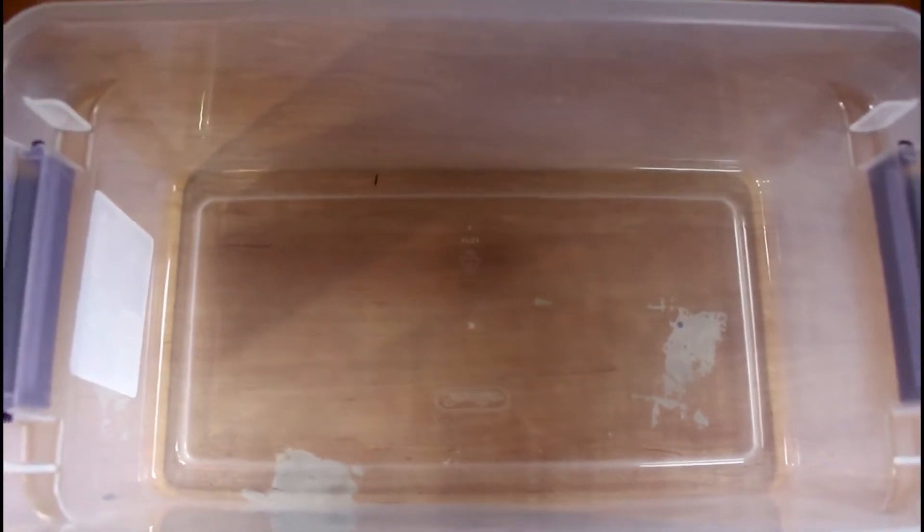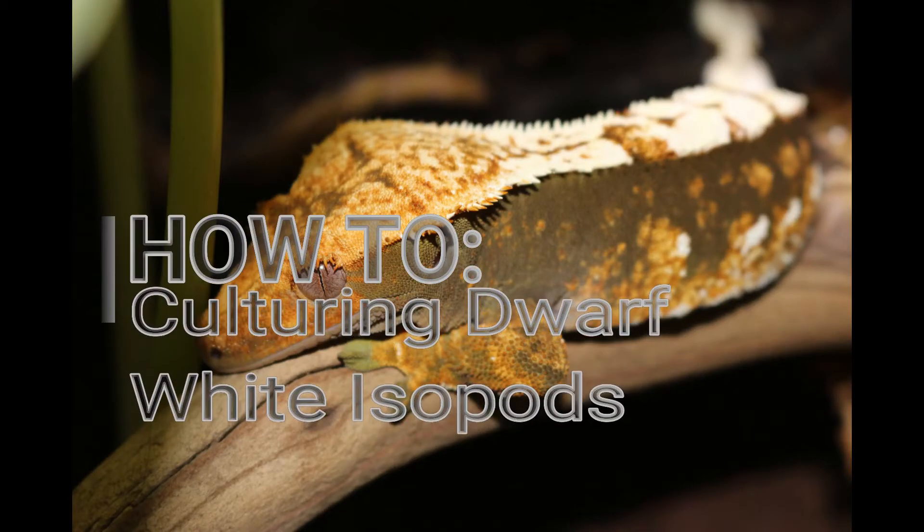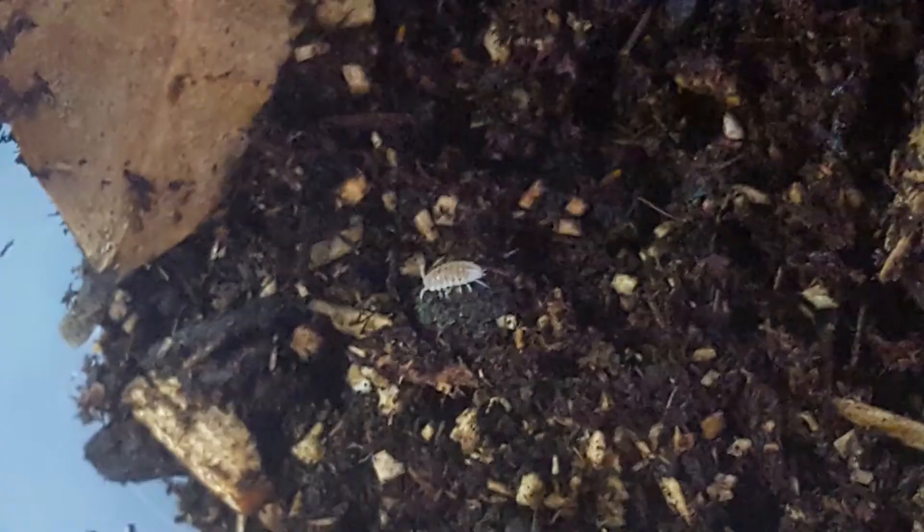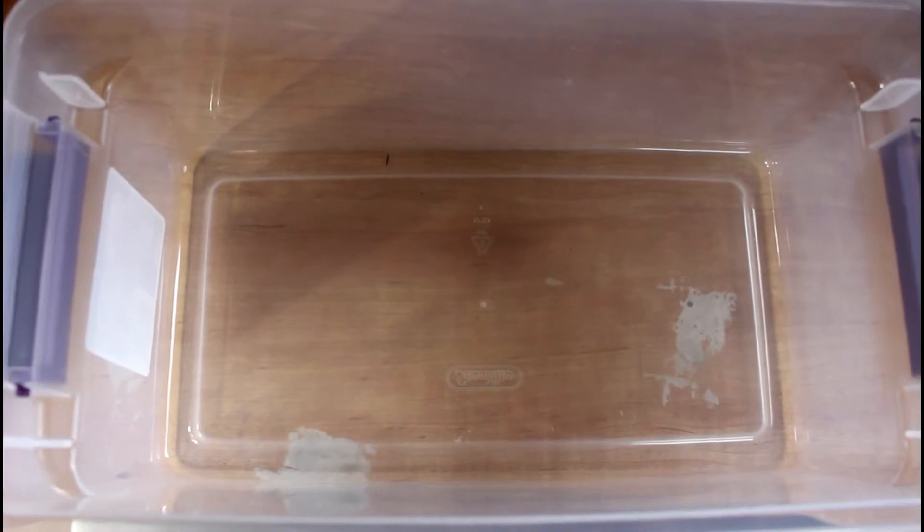What's up guys, it's Nick here at Gemini Reptiles, and we're back with another episode. In today's video, we're going to be talking about Trichorhina tomentosa, also known as the Dwarf White Isopods.